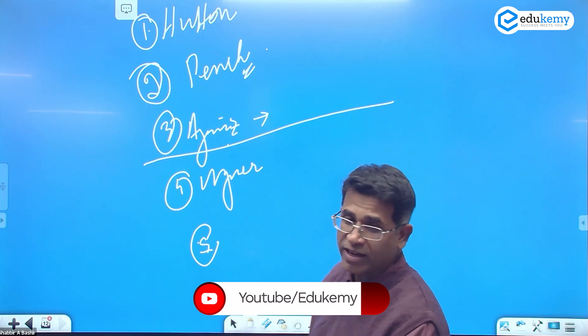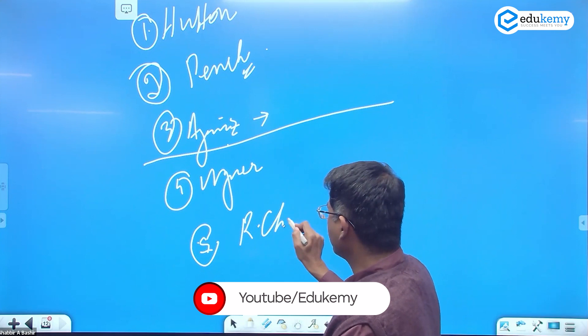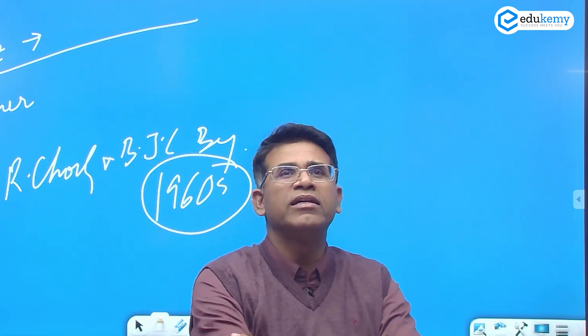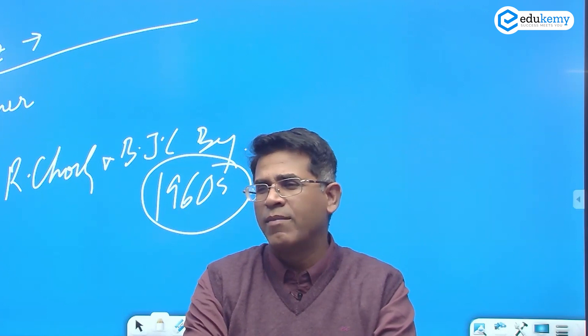Richard Chorley and BJL Berry, both Englishmen who talk about systems approach in geomorphology in the 1960s. BJL Berry and Richard Chorley - this is one of those last sort questions so that you at least are not lost when such questions come up. Mention those names.